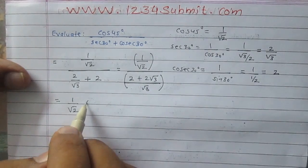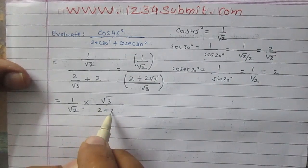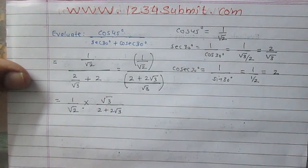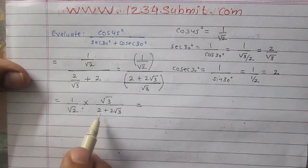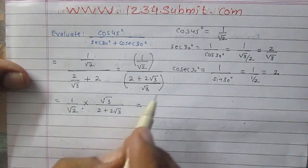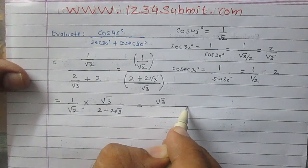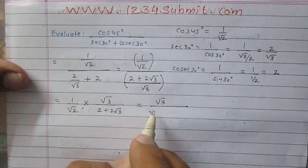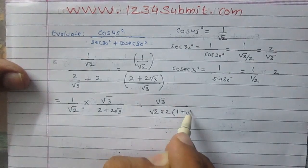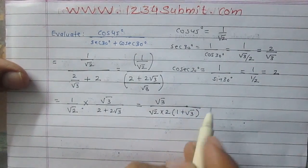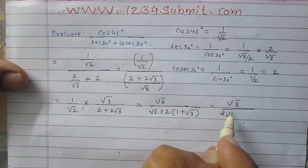We will multiply the reciprocal of the denominator to the numerator in order to simplify it. We can take 2 as a common factor and write it outside the bracket. See how square root 3 appears in the numerator and in the denominator it is square root 2 multiplied by 2 outside the bracket, and 1 plus square root 3 inside the bracket.